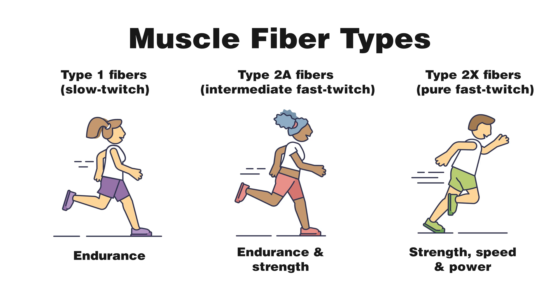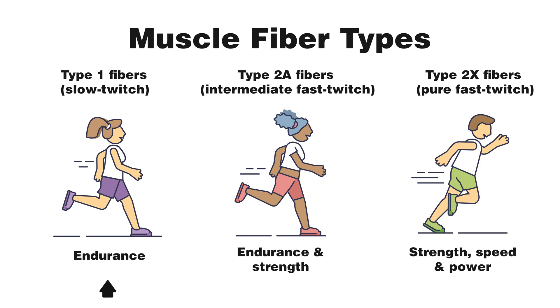When I first started learning about these names, I often used to get the type 1 and type 2 muscle fibers jumbled up. Here's a way to easily remember the difference: type 1 muscle fibers are the first type you use in everyday life, like picking up a cup off the table. The type 1 fibers are more efficient for the body to use, so it uses them first. You can tie that into slow twitch — you don't need a fast powerful movement, just a nice slow contraction.